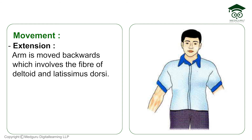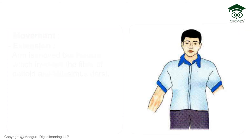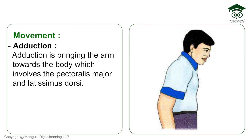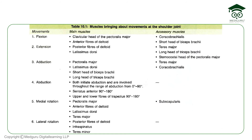Extension is the exact opposite — taking the hand towards the back. Two muscles perform extension: the posterior fibers of deltoid and latissimus dorsi. Adduction means bringing the arm towards your body. The muscles that cause adduction are pectoralis major and latissimus dorsi — the thoracic muscles that pull the hand to your side.